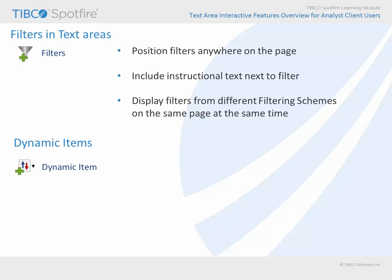Dynamic items which can be inserted into text areas are the same elements you will find in a graphical table visualization — sparklines, calculated values, icons, and bullet graphs. These will adjust dynamically according to the indicated filtering scheme, and, like filters, their inclusion within text areas represents an opportunity to incorporate these elements right along with the instructional text which places that element into context, rather than being isolated in a graphical table visualization.